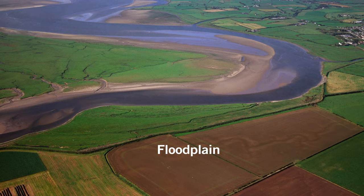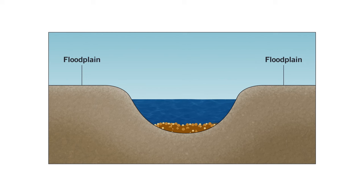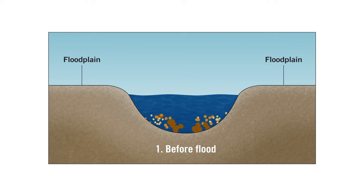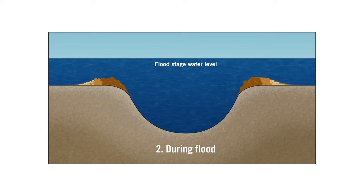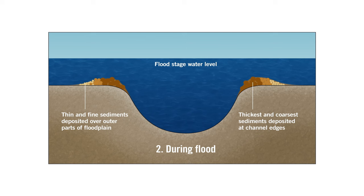Floodplains are critical to healthy river systems because, as their name implies, they help regulate floodwaters. Water on the floodplain slowly percolates into the sediments, which reduces the amount of water that flows back into the river during the flood. As water leaves the river channel and inundates the floodplain, friction between the floodwater and the river banks slows the water's flow locally, causing sediment in the floodwaters to be deposited and pile up along the banks of the river, creating a feature called a levee.